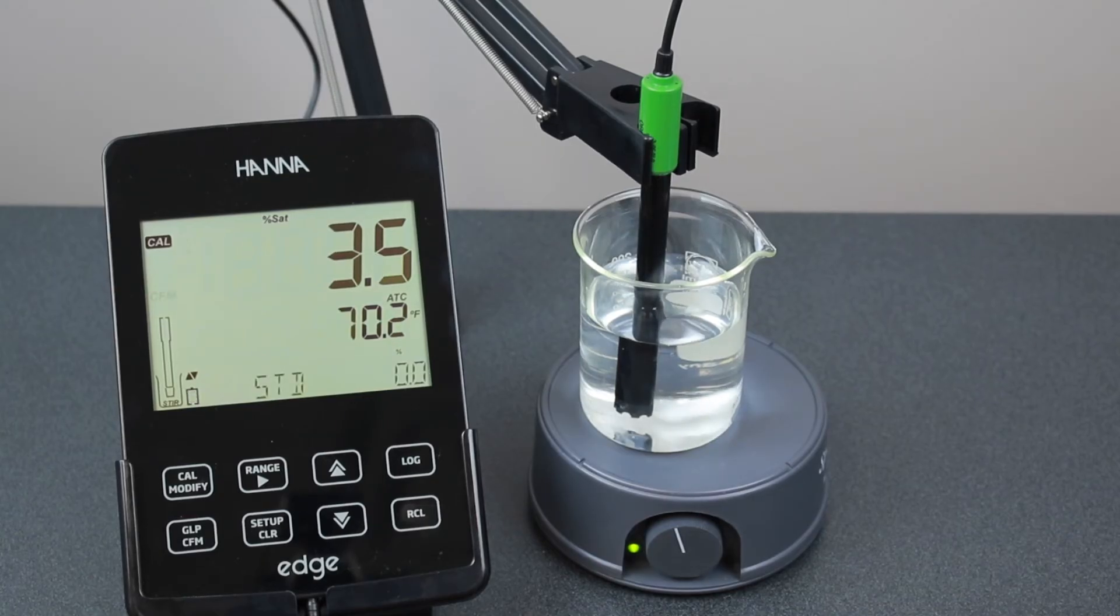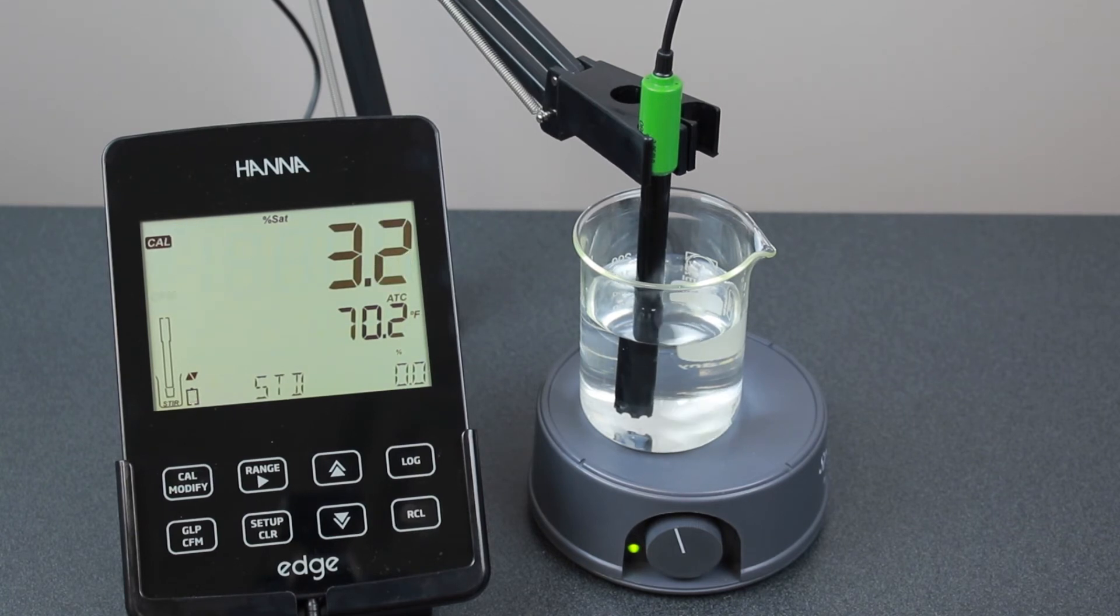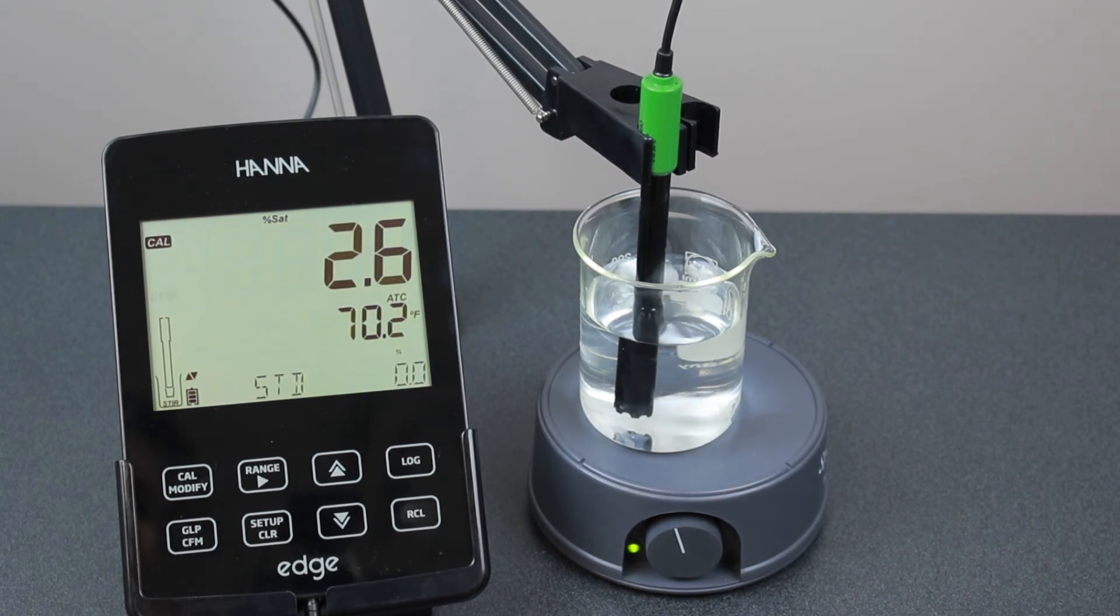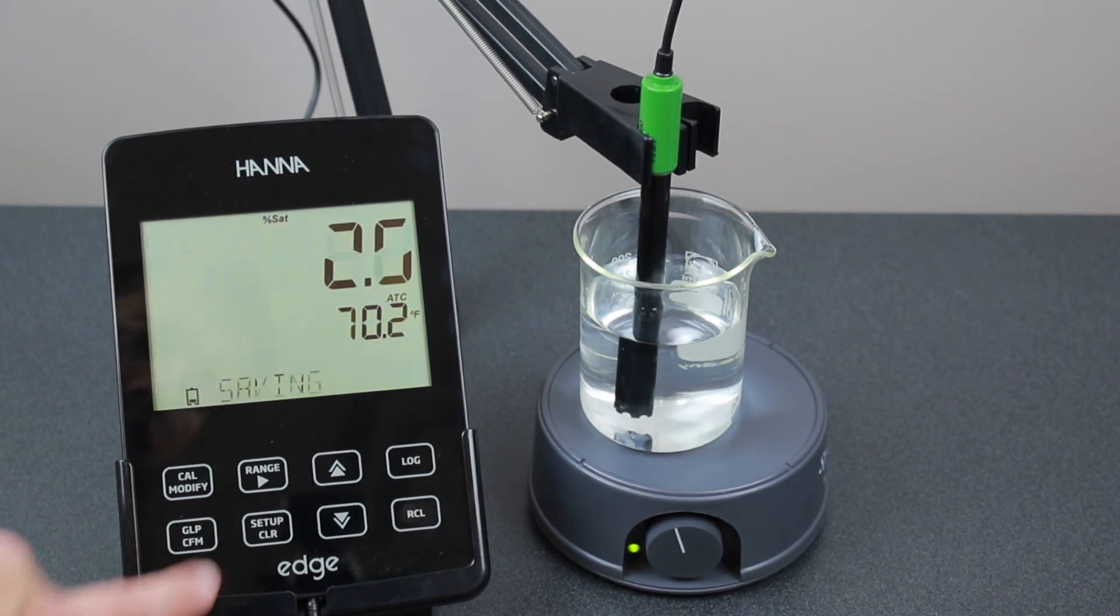Submerge the probe into a beaker containing HI70400 zero oxygen solution and stir gently for 2-3 minutes as the reading goes down. Be sure the temperature sensor is covered. When the reading is stable and stops decreasing, press confirm and the meter will automatically return to measurement mode.